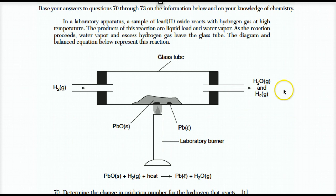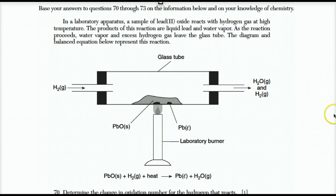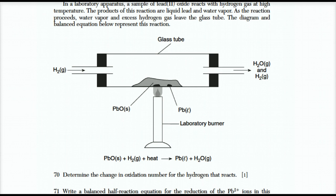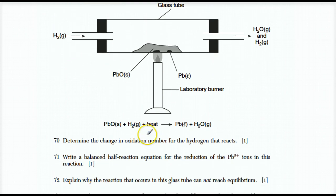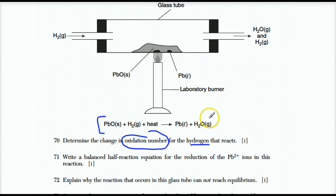Numbers 70 through 73 show a chemical apparatus performing a reaction. Look at the questions first — they're all easy and don't require you to understand the entire setup. Number 70: determine the change in oxidation number for the hydrogen that reacts. They gave you the overall reaction, so we need to find the oxidation number of hydrogen in H₂ and in H₂O. When hydrogen stands alone as an element, it is zero.